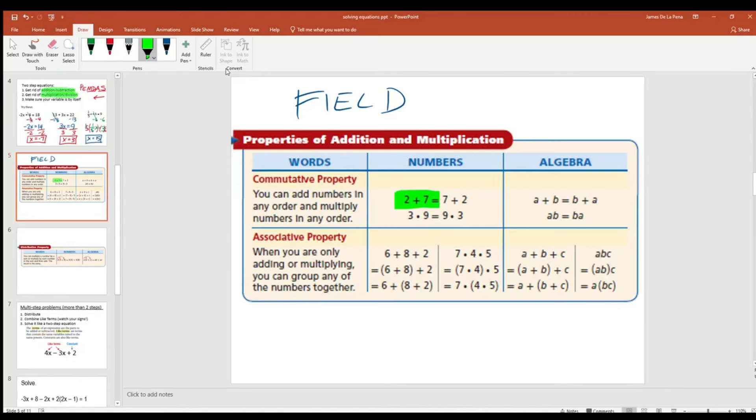So it just states that if we're adding three values at the same time, we can either add the first two together and then add the last one, or we can add the last two together and then add the first one to that. And we get the same number.